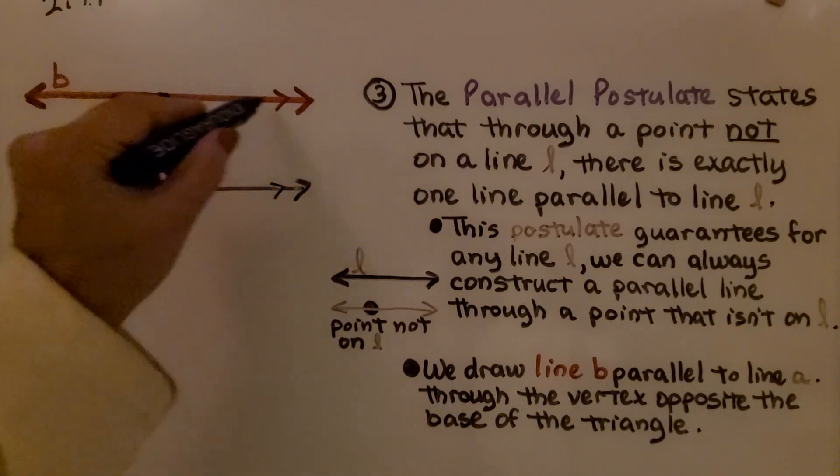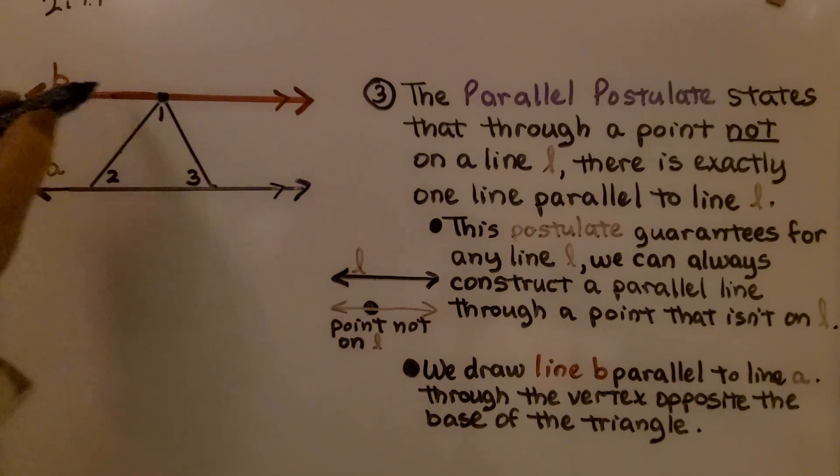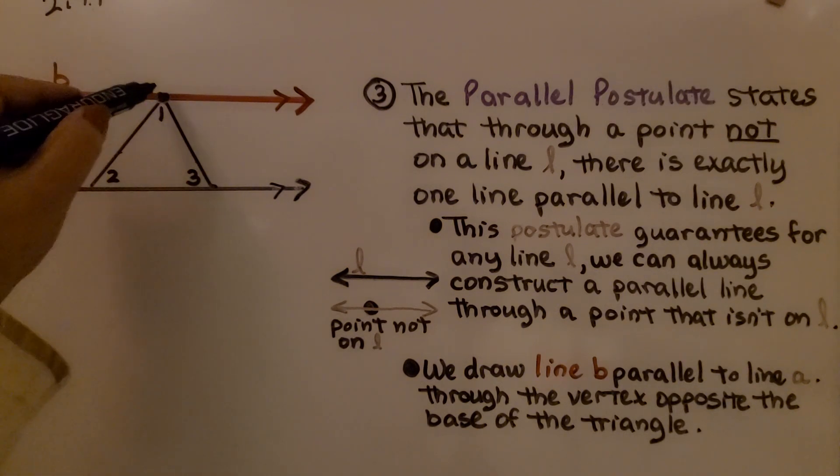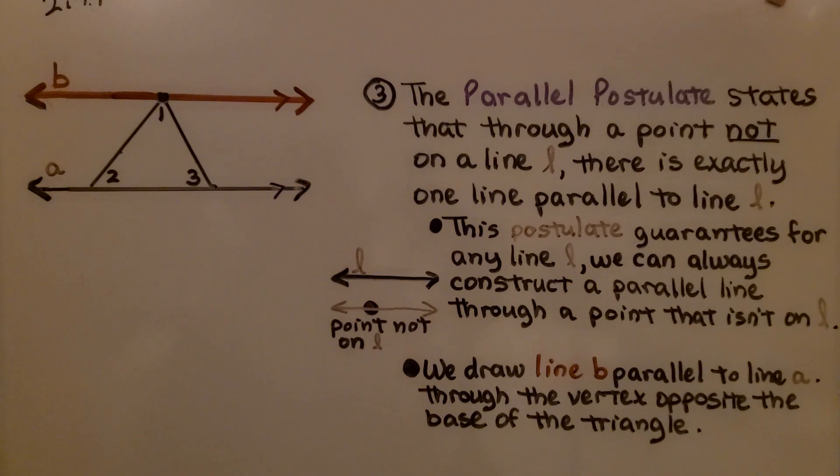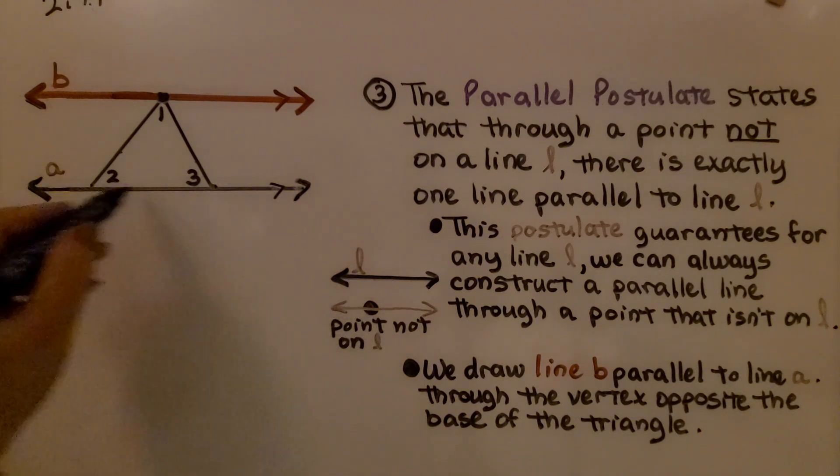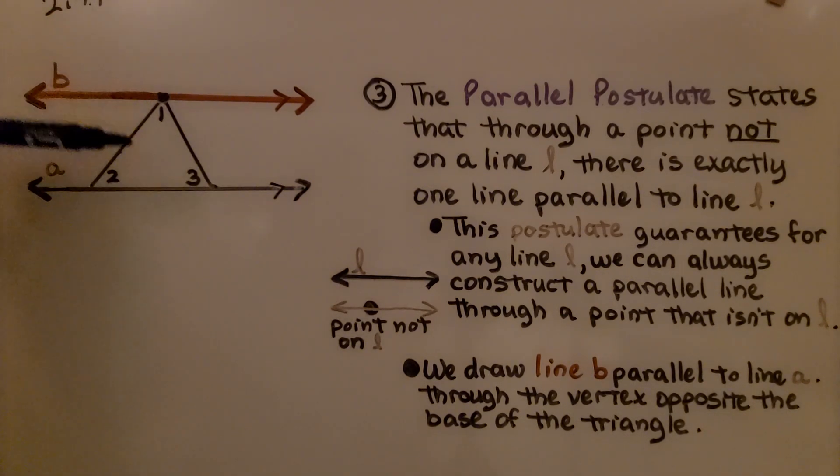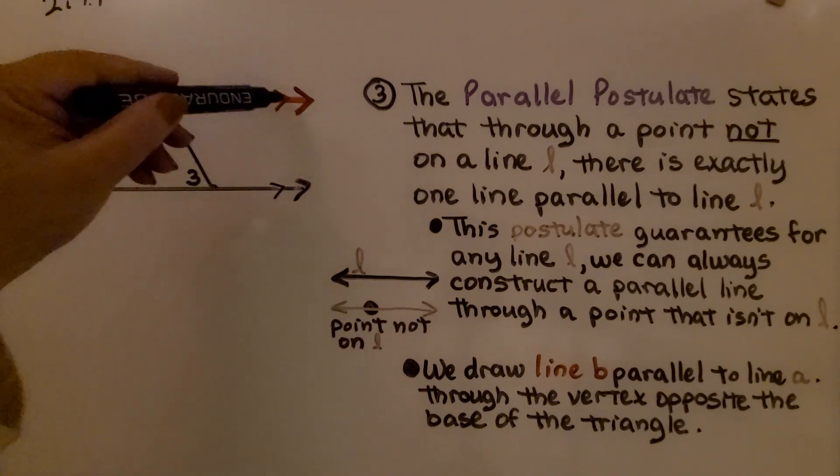That's going to be our point that's not on line A, and line B is going through that point right at the top of our triangle here. It's going through the vertex opposite the base of the triangle. So now it's opposite this base and we have parallel lines.